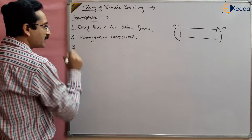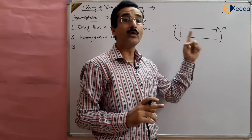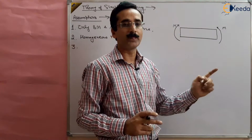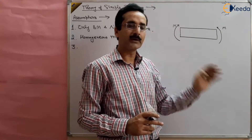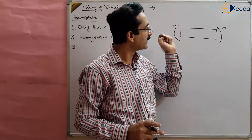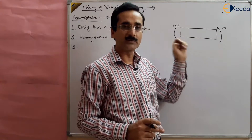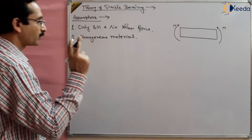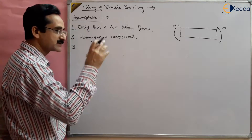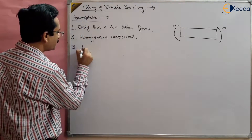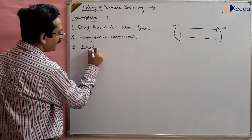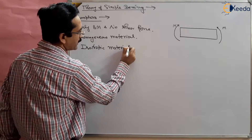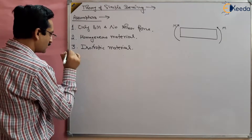The third assumption is that the properties of the material are the same in all directions — in the x, y, and z directions. Properties such as thermal conductivity, electrical conductivity, modulus of elasticity, and modulus of rigidity are all the same in every direction. This is called an isotropic material.